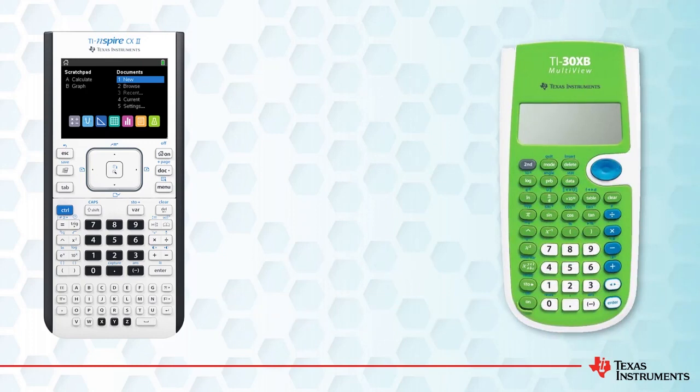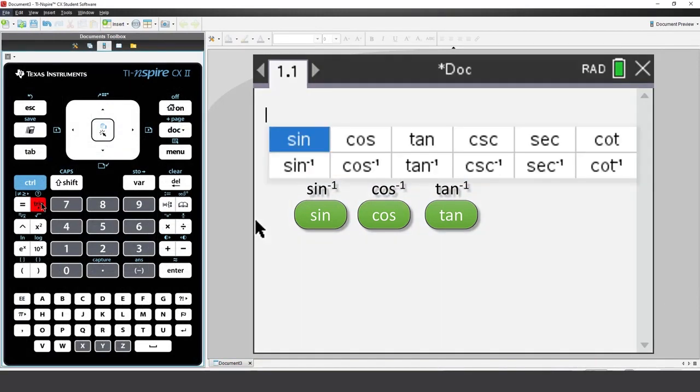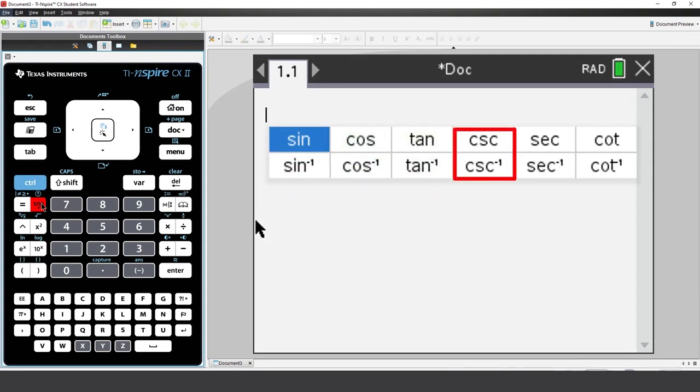Most scientific calculators have dedicated keys for sine, cosine, and tangent, and second function options for the inverse of each. TI-Inspire puts all of these buttons in one location and, as an added advantage, includes the lesser-known trigonometric functions cosecant, secant, and cotangent.